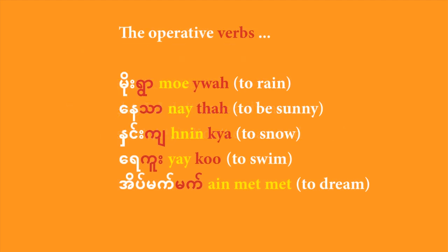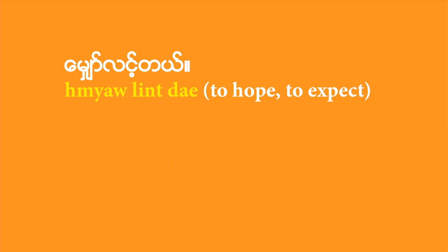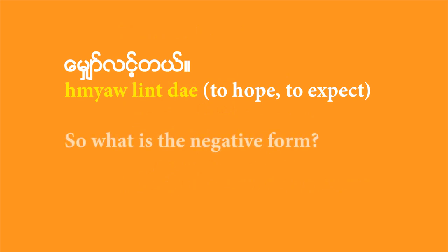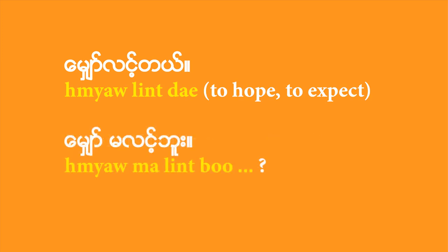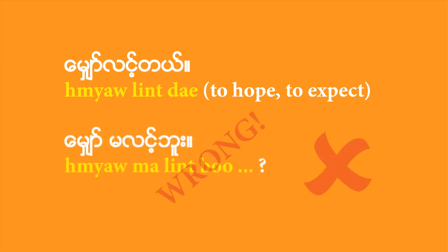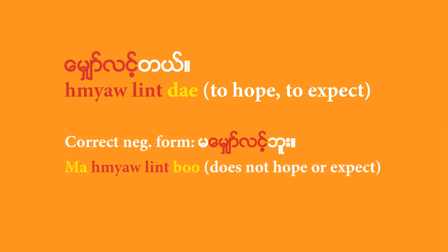Some of you might be thinking that whenever there is a compound verb, the last word is the true operative verb — so you just deal with that last word to form the negative. Well, not so fast. Take a look at the verb 'mewlin,' meaning to hope for or to expect something or somebody. This is not a case where one word is a noun and another a verb — both words are required to make the meaning 'mewlin.' So you cannot say 'mew malinbu' — that would be wrong. You have to negate the whole cluster with a 'ma' in front, and say 'ma mewlinbu.' That's how you say not expecting, not hoping for something or someone.